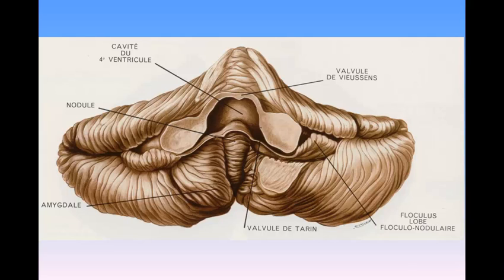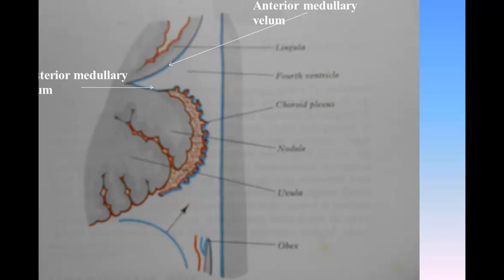The superior peduncle, on emerging from the central white substance of the cerebellum, passes upward and forward, forming at first the lateral boundaries of the upper part of the cavity. On approaching the inferior peduncle, they converge and their medial portions overlap the cavity and form part of its roof. The anterior medullary velum fills the angular interval between the superior peduncles and is continuous behind with the central white substance of the cerebellum.